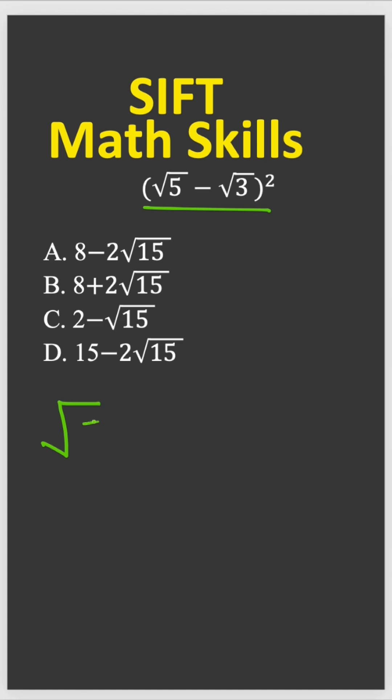Square root over 5 minus square root over 3 times square root over 5 minus square root over 3.